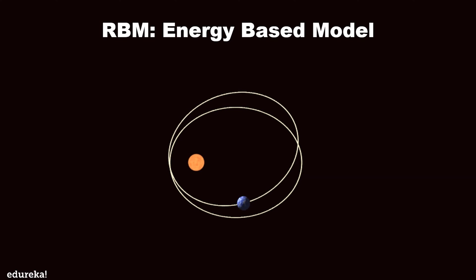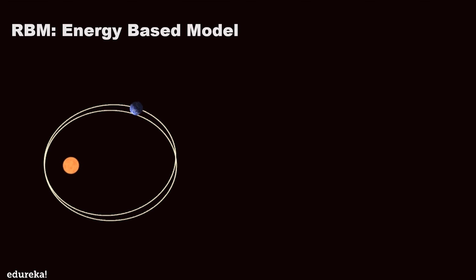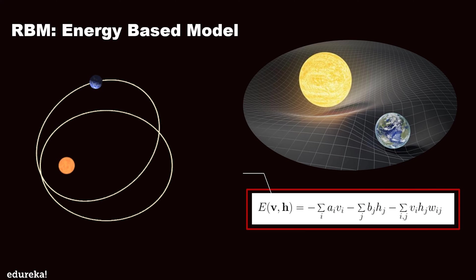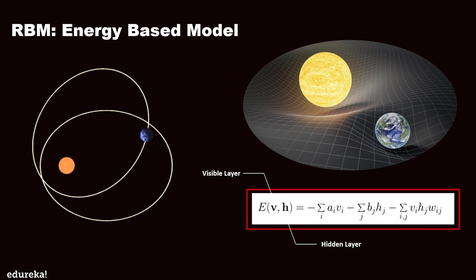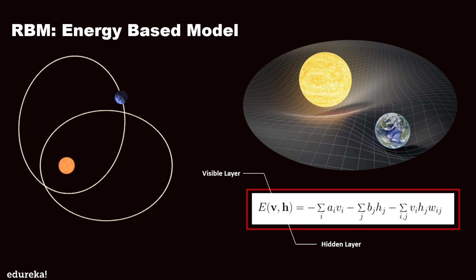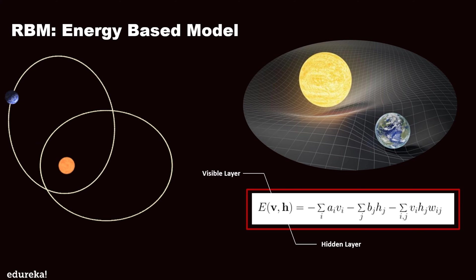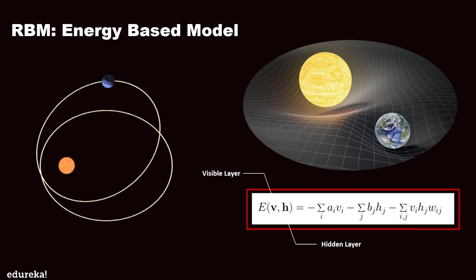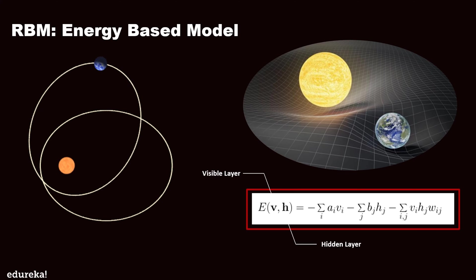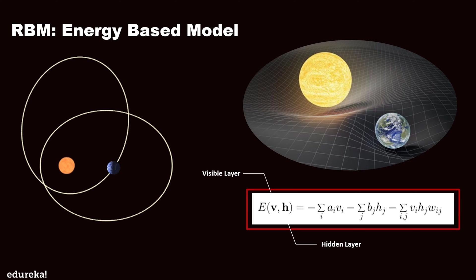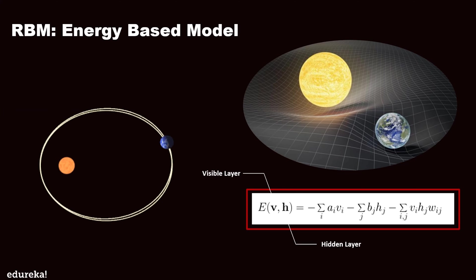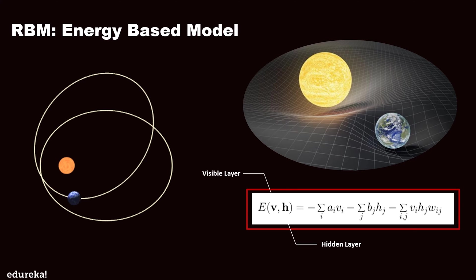Energy is a term not typically associated with deep learning, as it is a quantitative property of physics. Yet some deep learning architectures use the idea of energy as a metric for measuring model quality. Energy-based models encode dependencies between variables by associating a scalar energy to each configuration of variables, serving as a measure of compatibility. A high energy means bad compatibility, and the energy-based model always tries to minimize a predefined energy function. For RBMs, the energy function depends on the configurations of visible states, hidden states, weights, and biases. Training RBMs consists of finding parameters that minimize this energy.